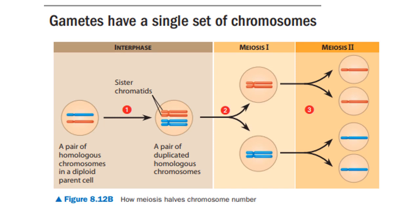Humans, as well as other animals and many plants, are said to be diploid organisms because all body cells contain pairs of homologous chromosomes. The total number of chromosomes is called the diploid number. For humans, the diploid number is 46, that is 2N equals 46.